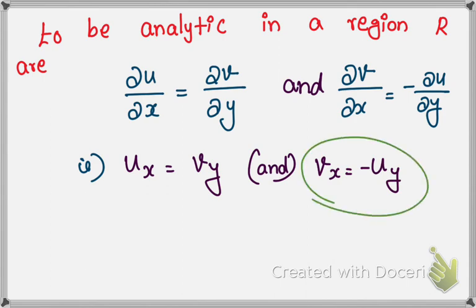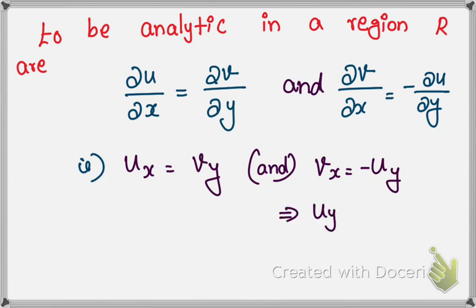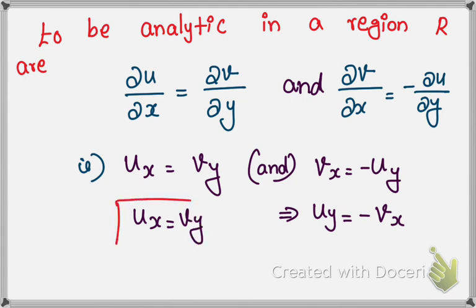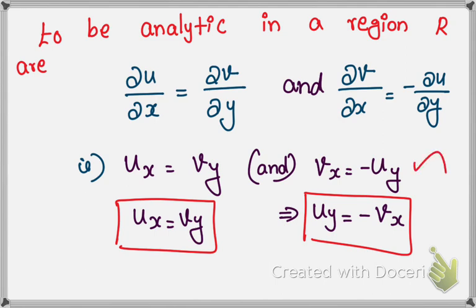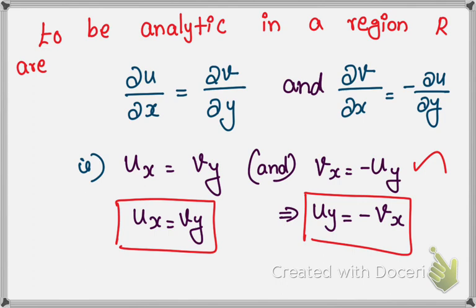If you multiply both sides by minus one, you get u_y = −v_x. So there are two equivalent equations: u_x = v_y, and either v_x = −u_y or u_y = −v_x. You can use either form. This is the necessary condition for the Cauchy-Riemann equations.